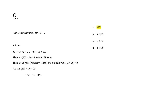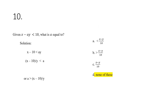For number nine, the sum of numbers from 50 to 100 accounts for 51 terms, giving 25 pairs with sums of 150 and a middle term of 75. So 150 times 25 plus 75 gives a value of 3,825.